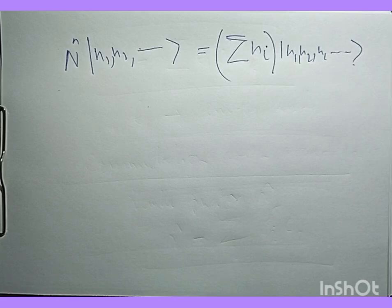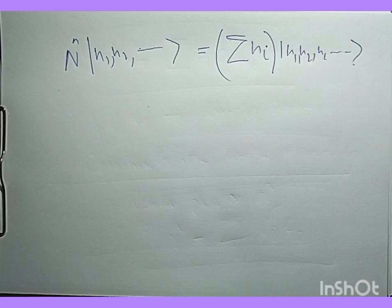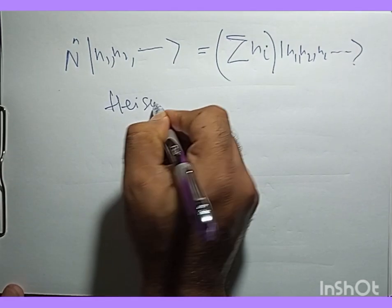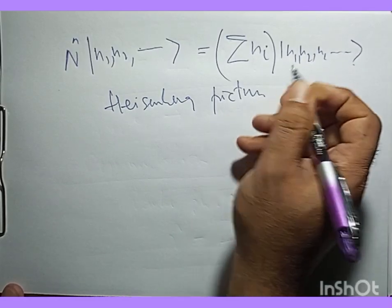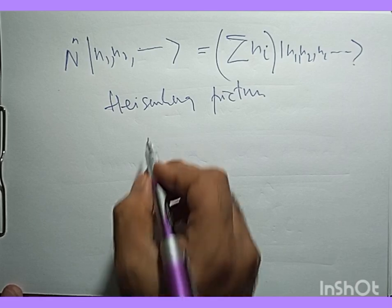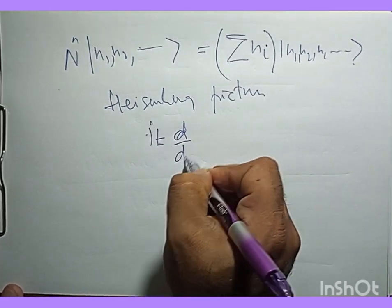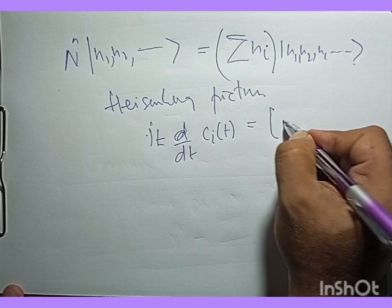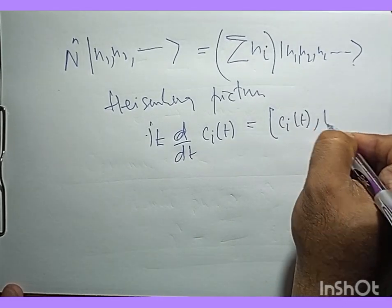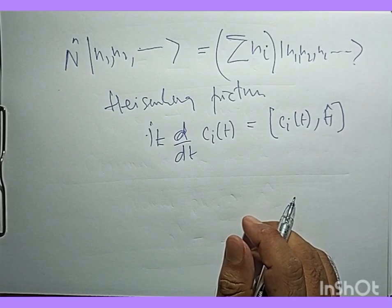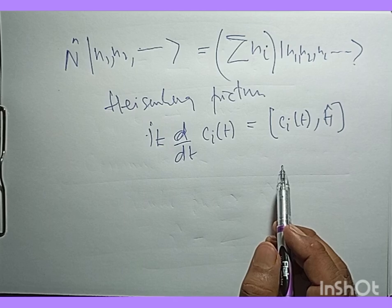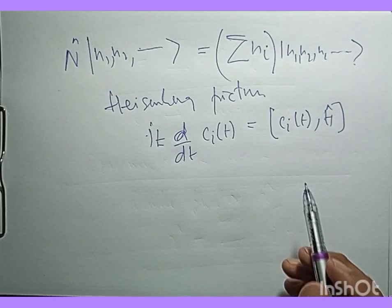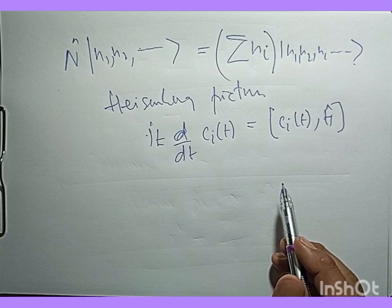Finally, for time evolution, in the Heisenberg picture operators evolve in time. The equation of motion is: iℏ d/dt c_i(t) = [c_i(t), H]. Using the anti-commutation relations and the Hamiltonian expressed in second quantization, one can derive the equations of motion for these operators.